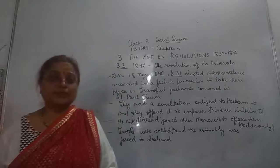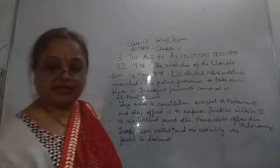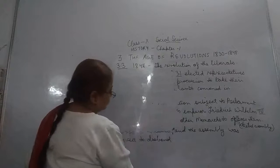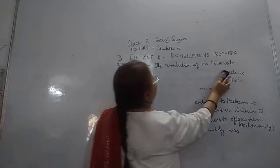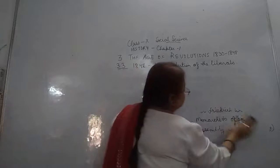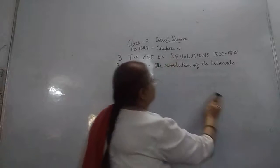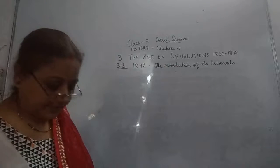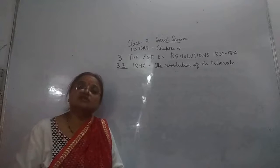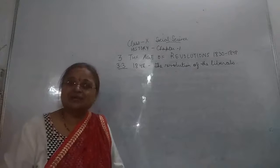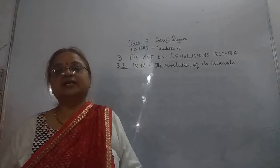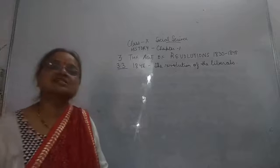This was all about the incident of the Frankfurt Parliament — a very frequently asked question. When we talk of revolutions, please remember 1830 to 1848. A lot of revolutions had happened, and none of these revolutions were successful. All these revolutions were a failure, because the way the monarchs and the upper class people were powerful, they kept suppressing these movements again and again.